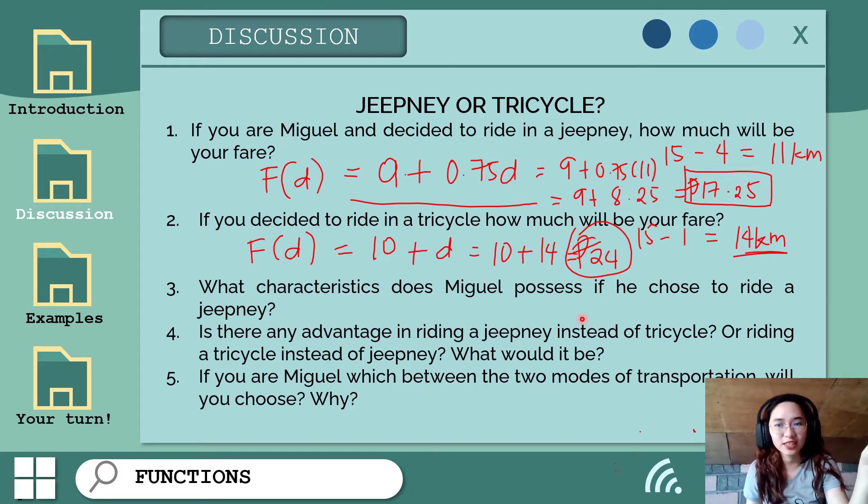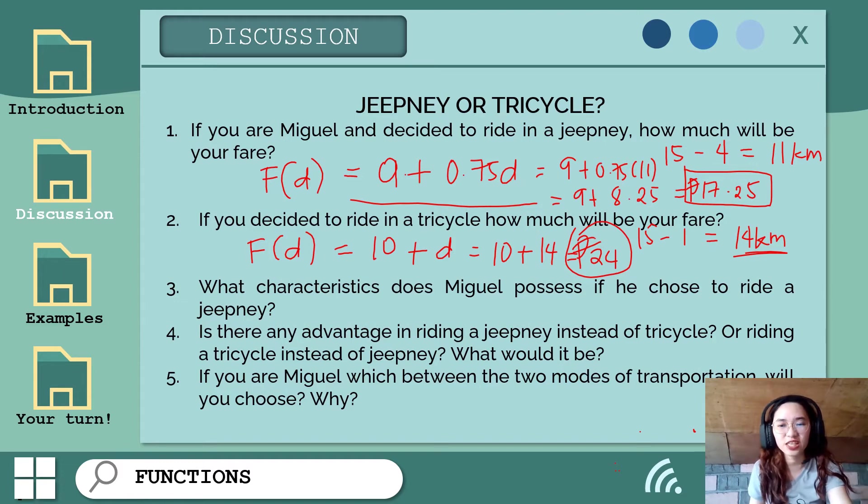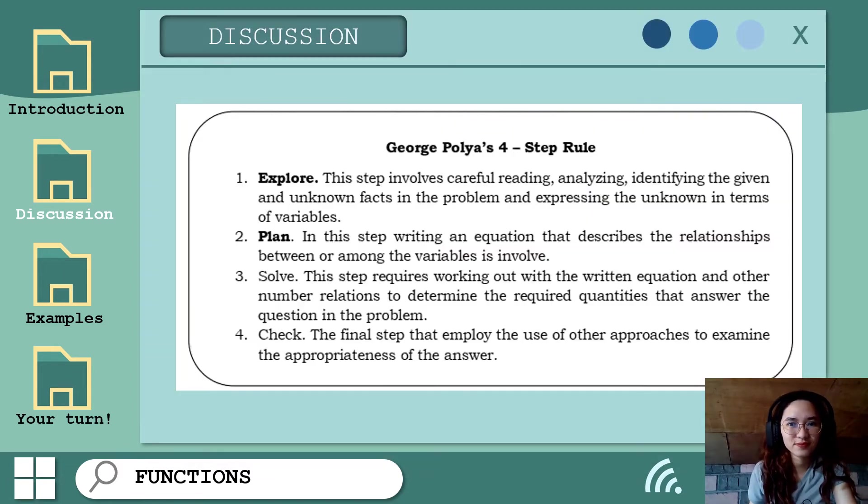Before we proceed, let's review the steps we use when solving problems. I know many of us have our own way of solving problems, specifically math problems. But you can also try these steps by George Polya. The first is to explore. This step involves carefully reading, analyzing, identifying the given and unknown facts in the problem, then expressing the unknown in terms of variables. So we explore everything in the problem.